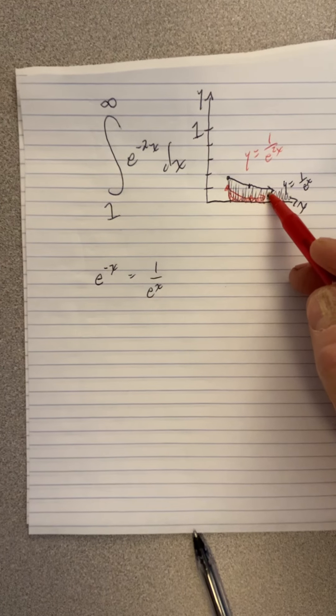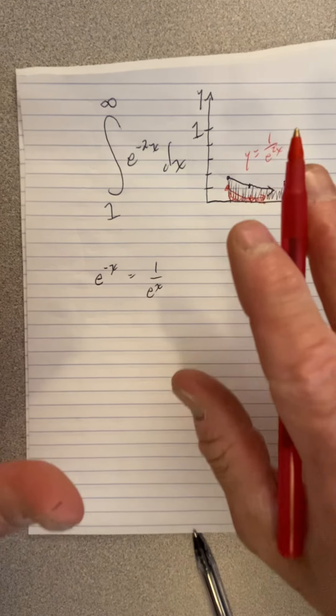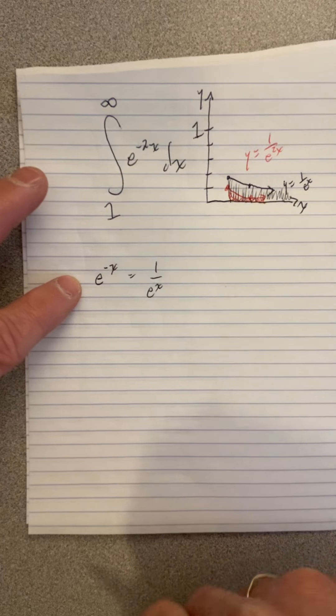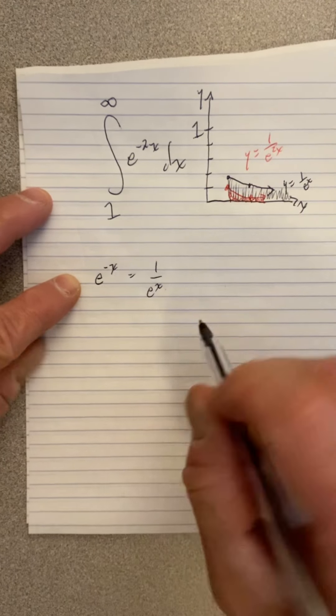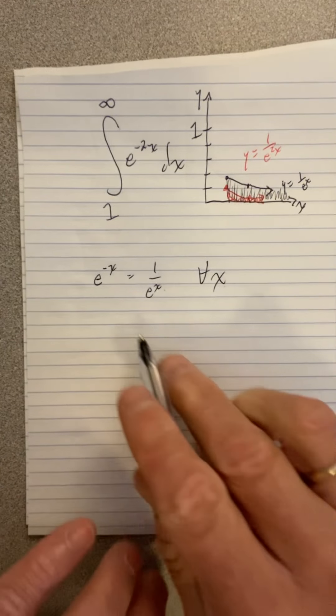We already know the black area converges from the previous work. So we think this converges, but we have to prove it. So the way I'm going to do that is I'm going to say, look, this is always true for all x. That's always true, right?